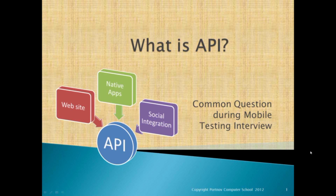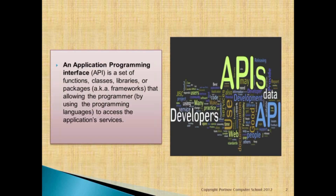What is API? An application programming interface is a set of functions, classes, libraries, or packages, also known as frameworks, that allow the programmer, by using programming languages, to access the application services.